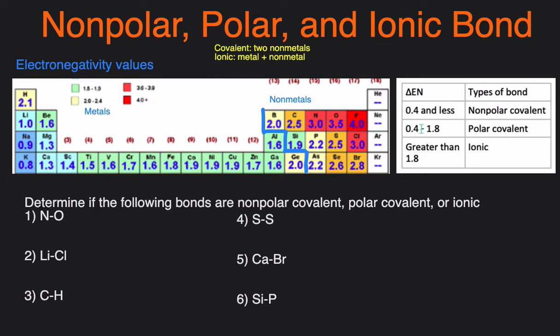look at the electronegativity differences. If it's 0.4 or less, it'll be non-polar. If it's between 0.4 to 1.8, it'll be polar covalent.